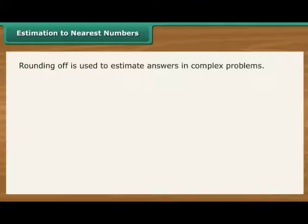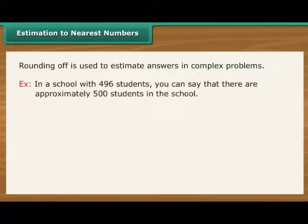Estimation to nearest numbers. As we come across large numbers, performing calculations on them becomes complex. To avoid the complexity, estimation or rounding off is used. For example, in a school with 496 students, you can say that there are approximately 500 students in the school.